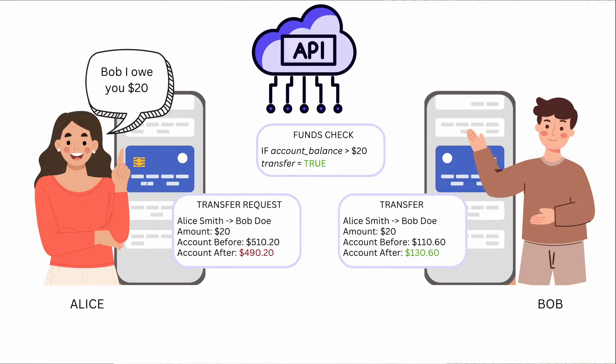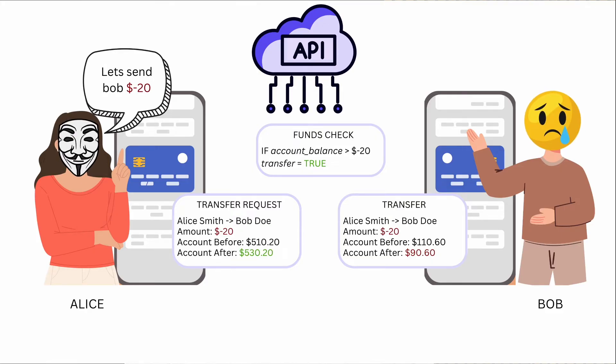Now, let's implement a business logic flaw here. What if Alice sends negative $20 to Bob? Does that then credit Alice and deduct from Bob? Is that a way of forcing a withdrawal of money from other people? Does it crash? Now, this sounds silly, and I'm sure you're thinking that it does. If you were designing a bank, you wouldn't allow that to happen. Well, let's talk about a scenario where that actually did happen.